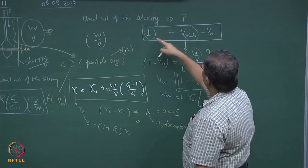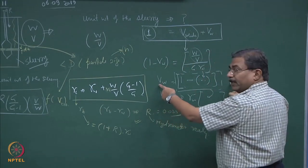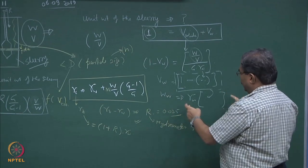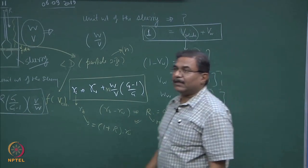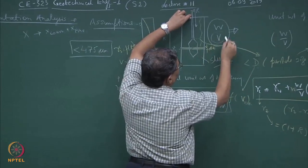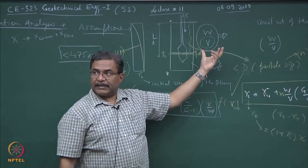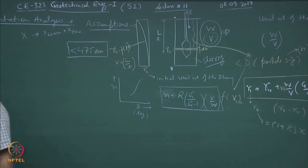Hence you can compute: 1 minus the solid fraction equals volume of water, or V_w will be this expression. Weight of water can be computed by multiplying this system by gamma_w, so this becomes the weight of the water. V is the total volume — the total volume of the cylinder in which you have taken the suspension. Normally what you do is take 50 grams of soil in 1000 cc, so this V becomes 1000 cc.